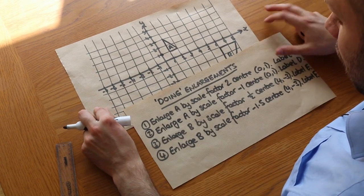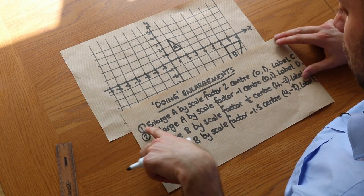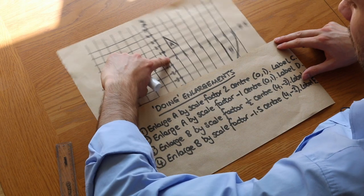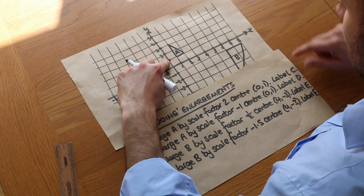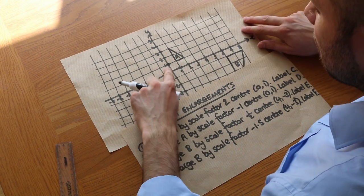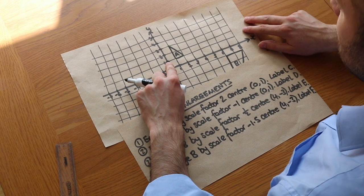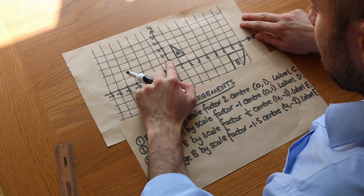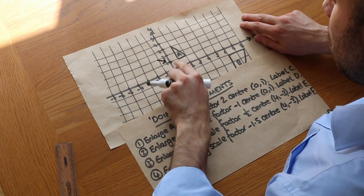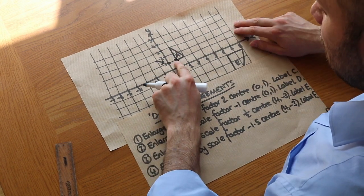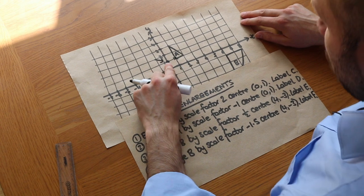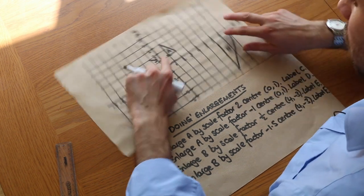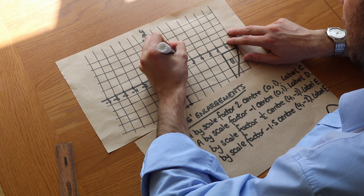Let's use that theory to actually do some enlargements. We want to enlarge shape A by scale factor 2, centre (0,1), which I've marked on, and we're going to label that shape C. The method is to always start from the centre of enlargement and count how many squares we go across and up or down to each point on A. To get from the centre of enlargement to this first point, we're going one square right and zero squares up. We times that count by the scale factor, so the one right becomes two right — from the centre we count two right and it ends up here.